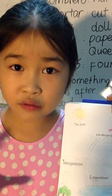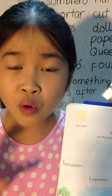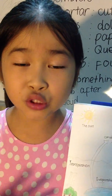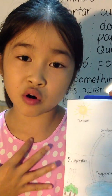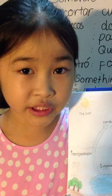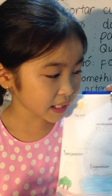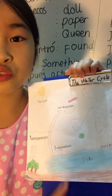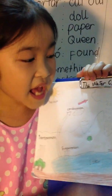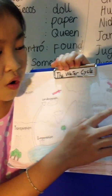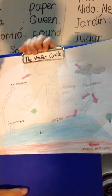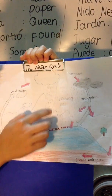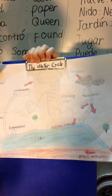When the clouds get too heavy and they can't hold anymore, they burst out and then it rains back to earth. This is called precipitation. And here is the rain — you can see it.